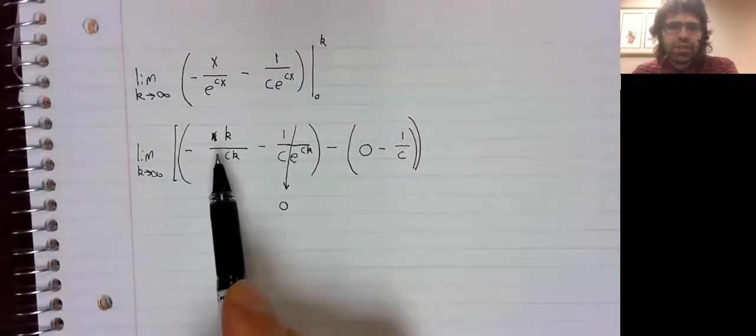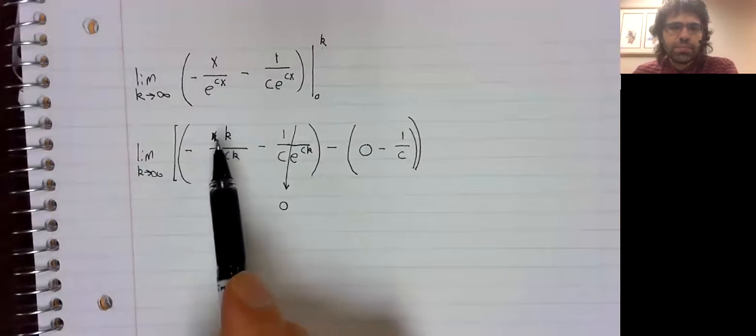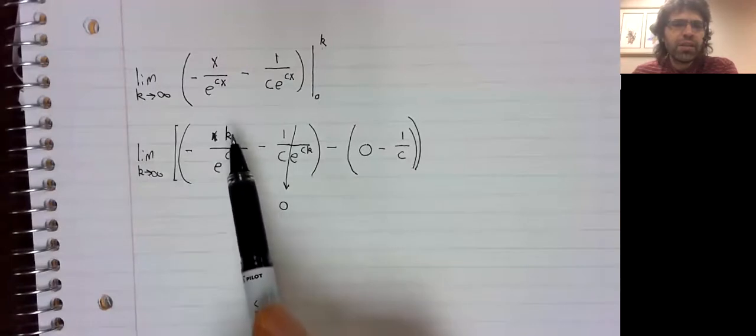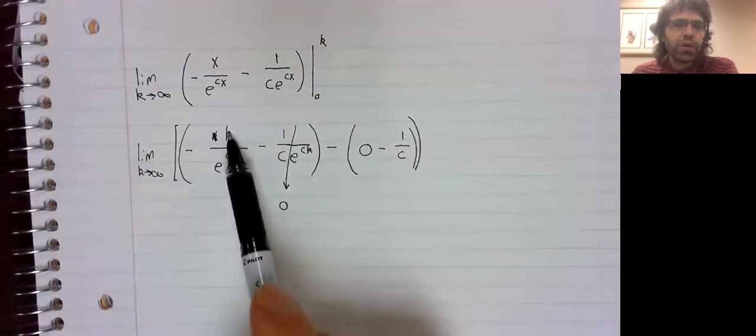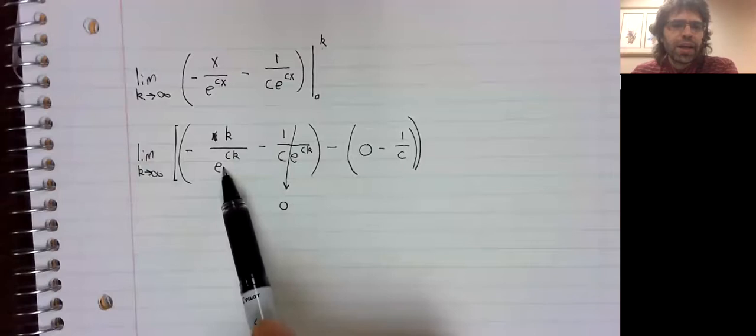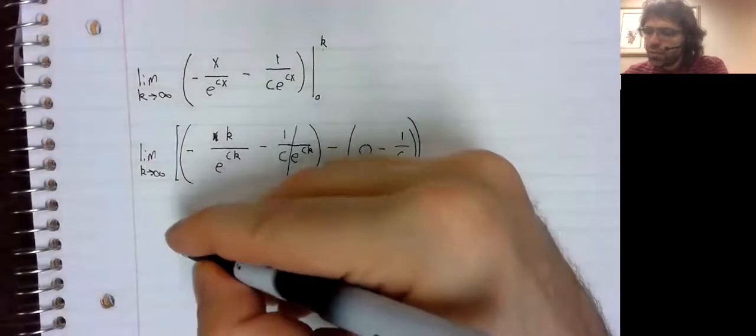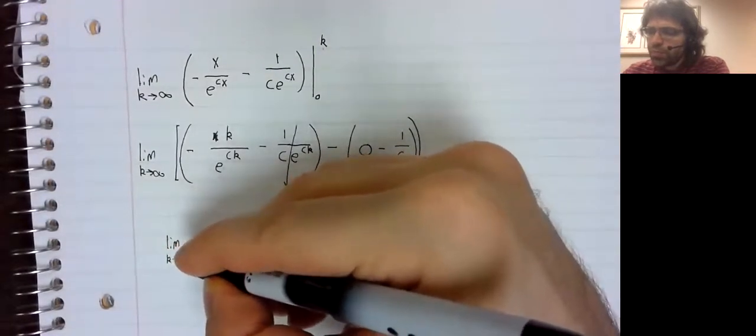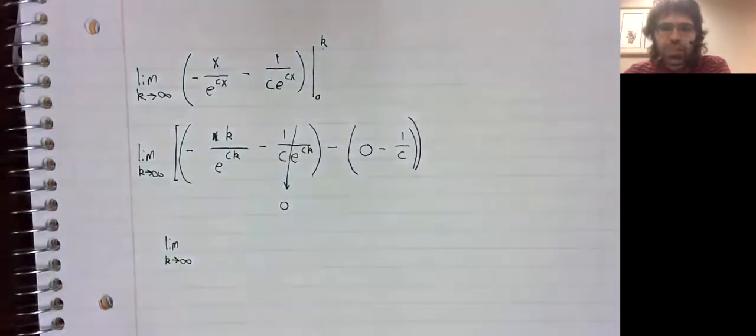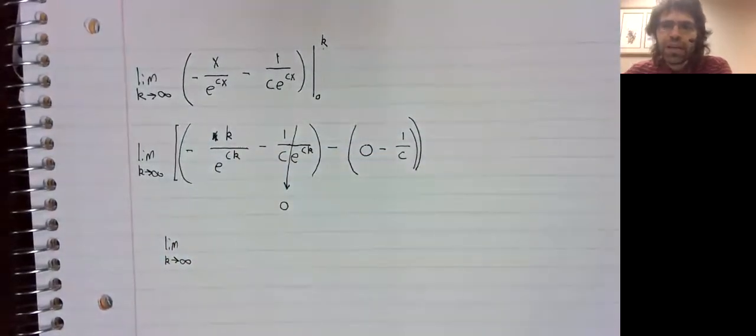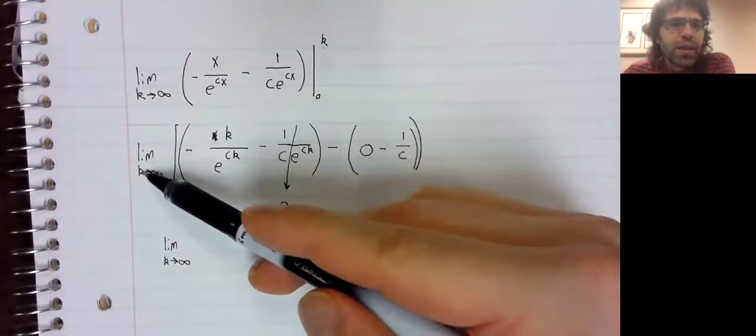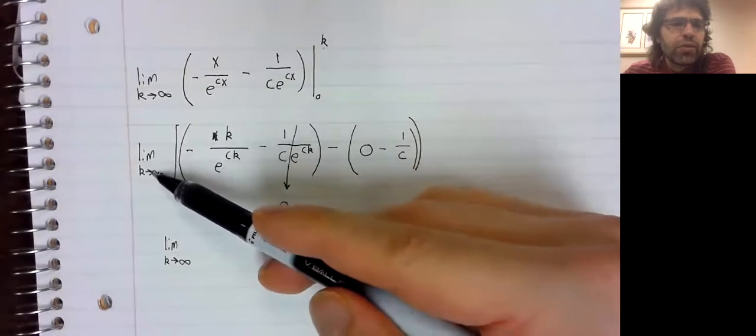This is unclear as k goes to infinity. The numerator goes to infinity, and the denominator goes to infinity. But in that situation, we have a tool we can use, L'Hopital's rule.